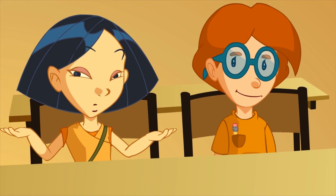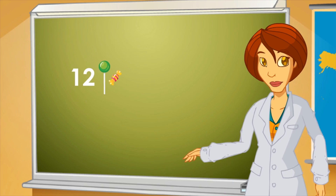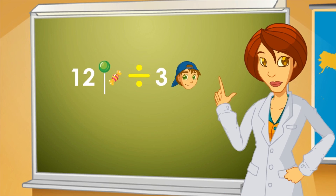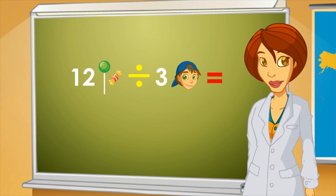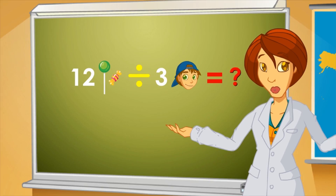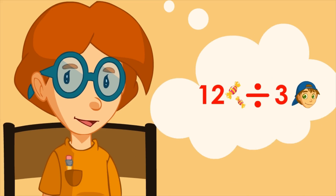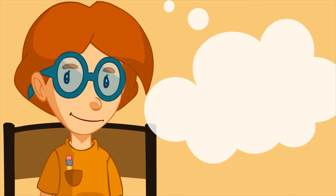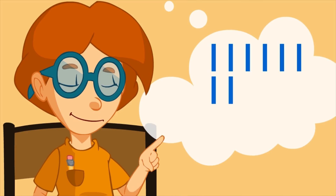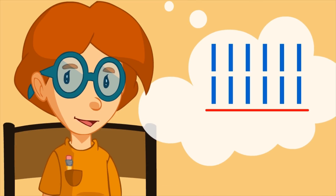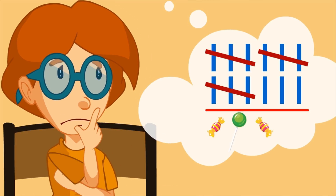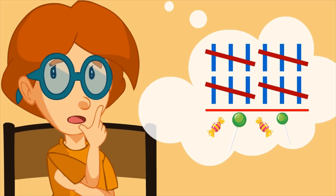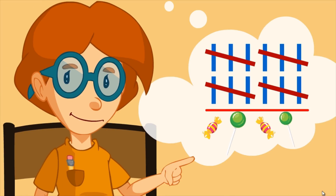Can we do another one? I must share out 12 sweets with 3 friends. How many sweets will I give to each one? 12 sweets for 3 friends. First, I draw 12 lines, and then I cross out every 3 sweets. So, we'll give 4 sweets each.